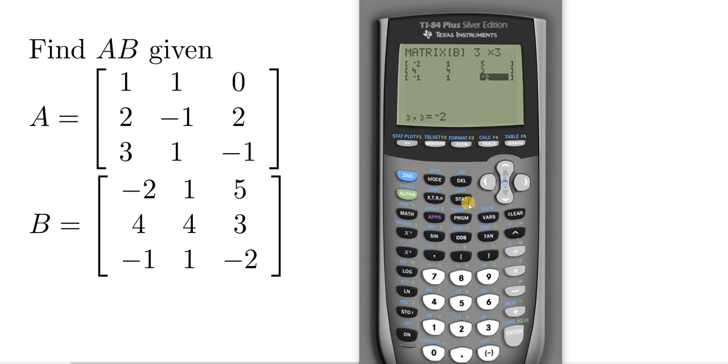So again, take your time, pause the video if you have to, and just carefully type in both of your matrices. Also, it's a good idea to check that you typed them in correctly. So negative 2, 1, 5, 4, 4, 3, negative 1, 1, negative 2. So mine looks okay. I'm going to go back and check my other matrix.